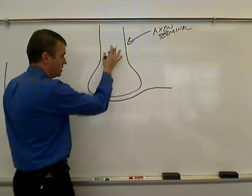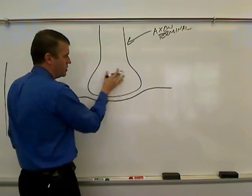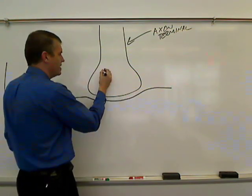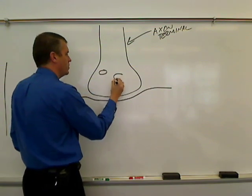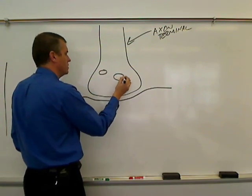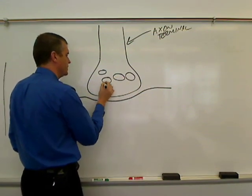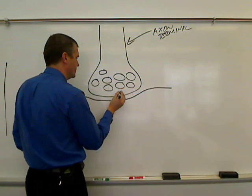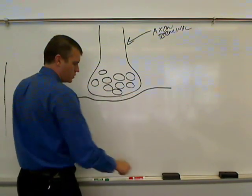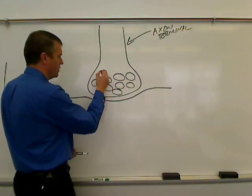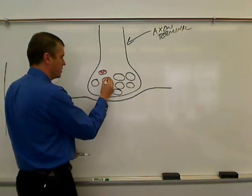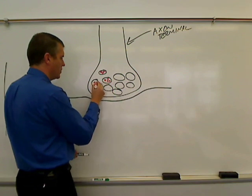That's the axon terminal — the axonal bouton of the presynaptic neuron. Inside of this axonal bouton will be vesicles, and those vesicles will have neurotransmitter inside of them.